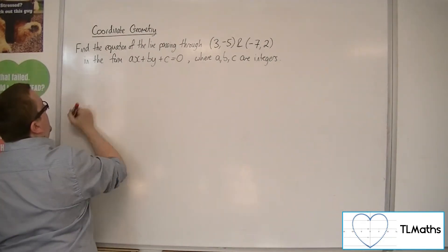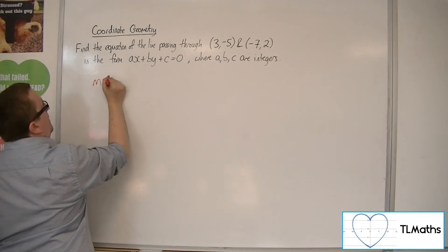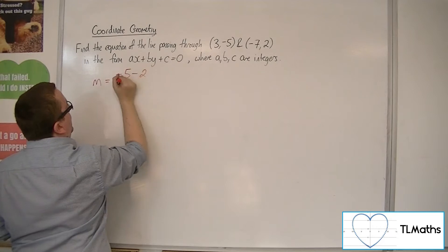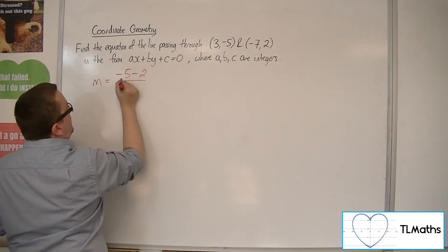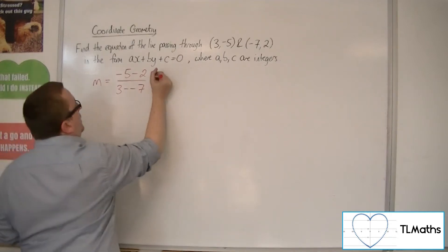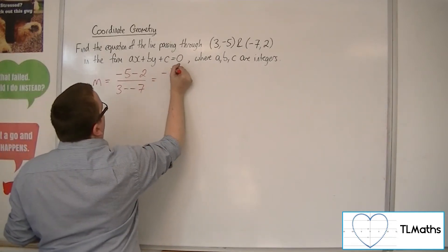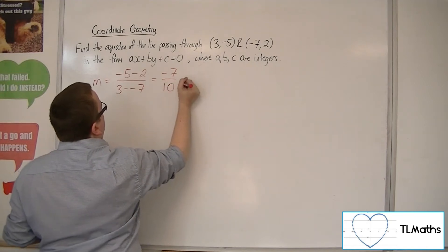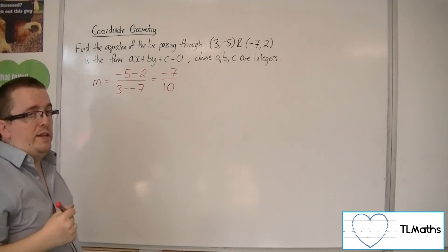So first of all, I need to find the gradient of the line m. So that will be the difference in the y coordinates, -5 take away 2, divided by the difference in the x coordinates, so 3 take away -7. So we'll have -7 in the numerator and 10 in the denominator, so -7/10 is the gradient.